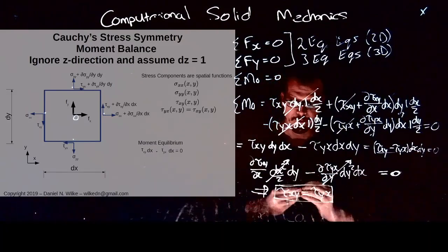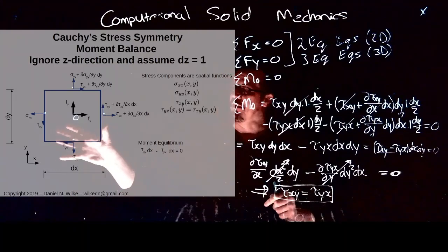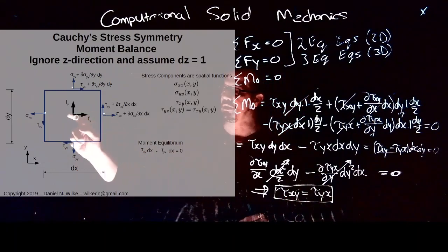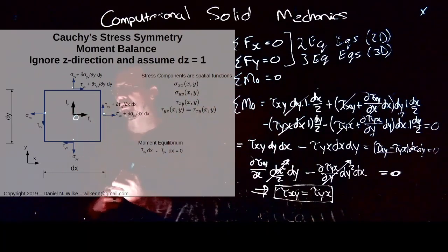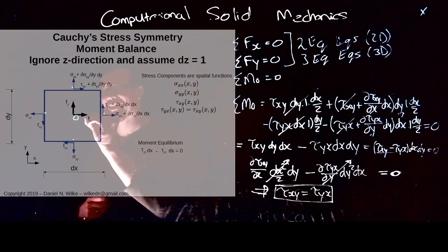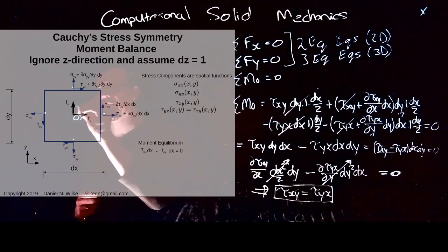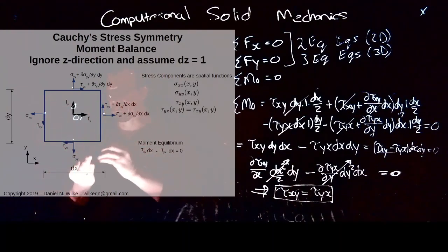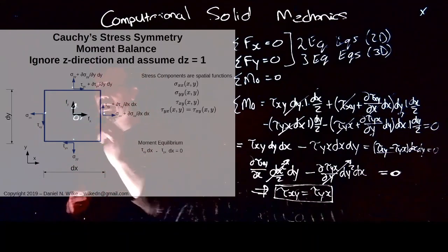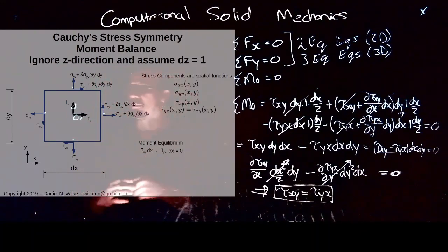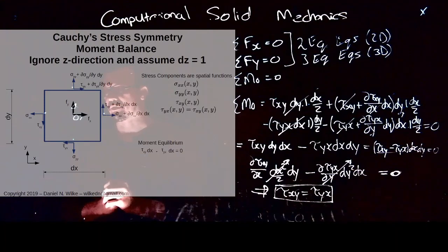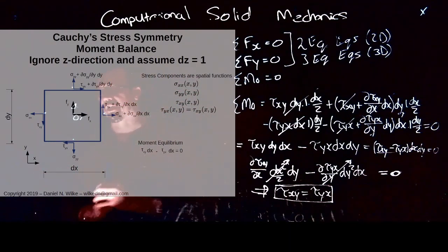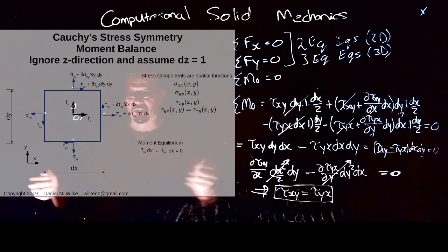The implication is: if this cube is to be in equilibrium, then tau_xy must equal tau_yx, provided there is no local couple acting at that point. If there were a local moment, tau_xy could differ from tau_yx because the moment imbalance would be needed to counter that local moment. However, this is only for special materials that can invoke a local moment at each point — which is not the case in this course, where moments result only from macroscopic applied forces.